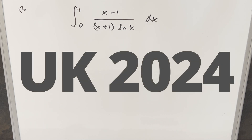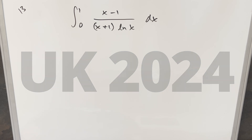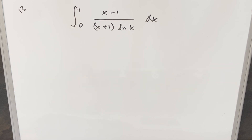Really interesting integral here today. We've got this one from the UK Integration Bee 2024, number 13. We've got the integral from 0 to 1 of (x minus 1) over (x plus 1) times ln(x) dx.